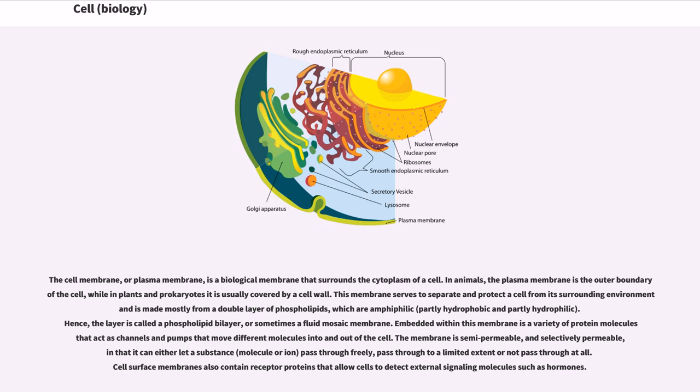Embedded within this membrane is a variety of protein molecules that act as channels and pumps that move different molecules into and out of the cell. The membrane is semi-permeable and selectively permeable in that it can either let a substance, molecule or ion, pass through freely, pass through to a limited extent or not pass through at all. Cell surface membranes also contain receptor proteins that allow cells to detect external signaling molecules such as hormones.